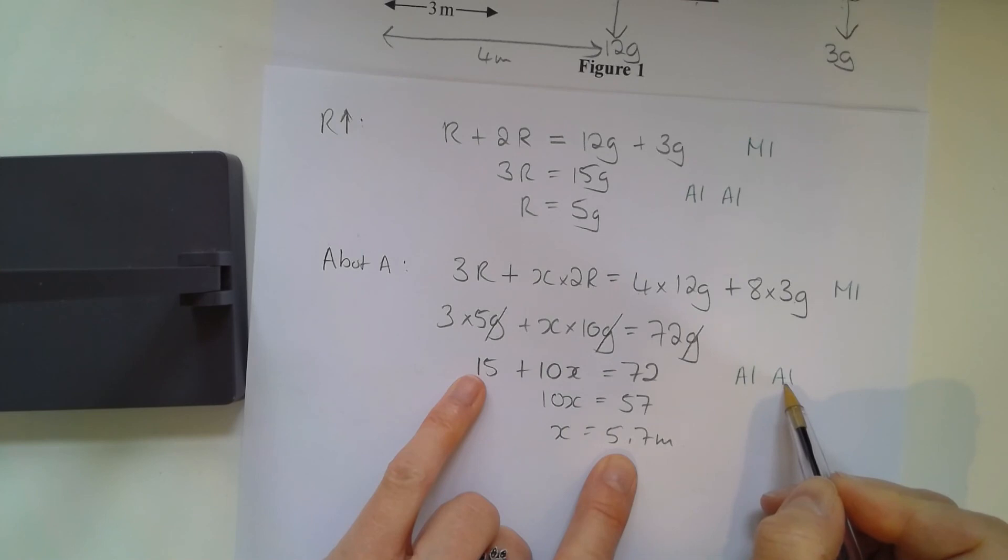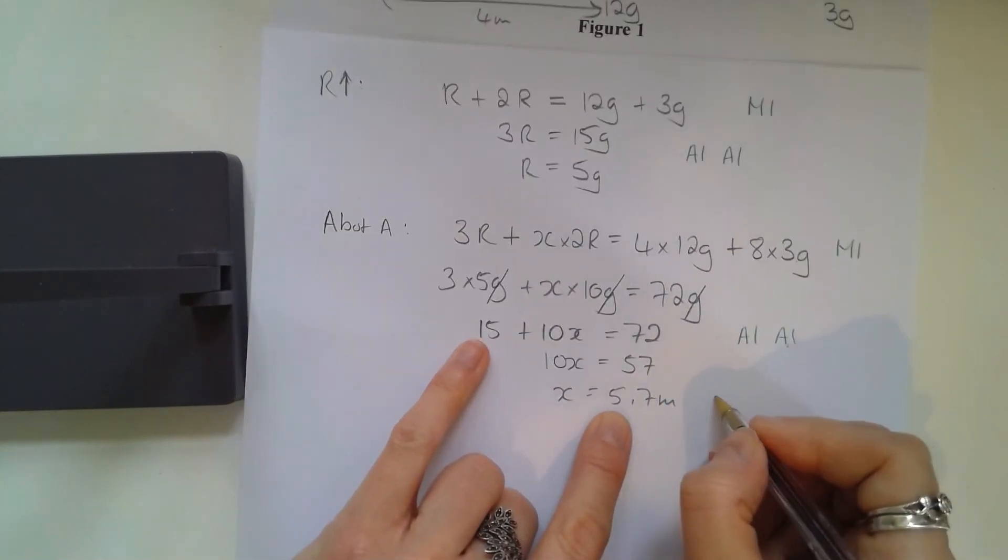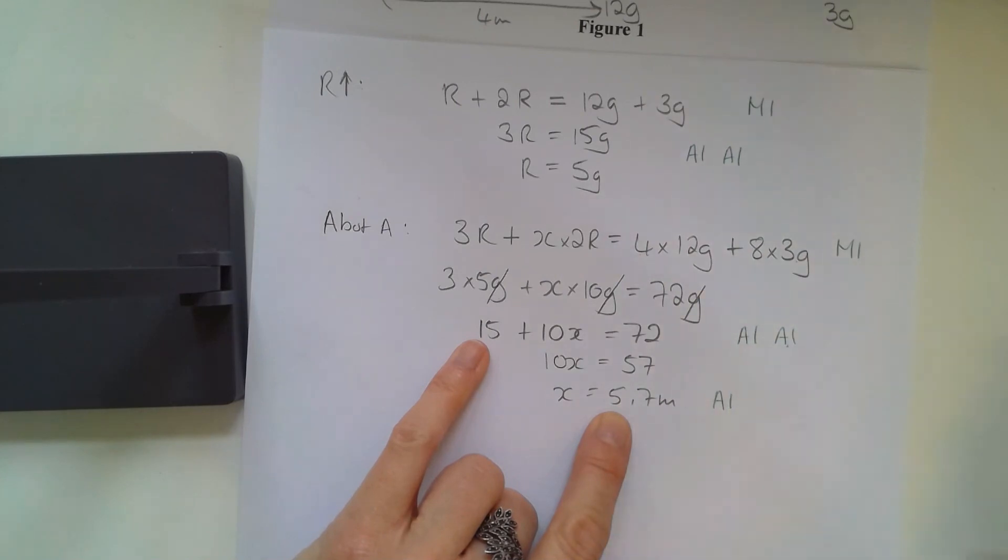So if you've got two or more incorrect, then you don't get any marks for that part, the accuracy marks. And then a final accuracy mark for the final answer correct.